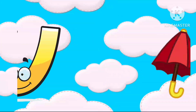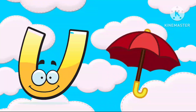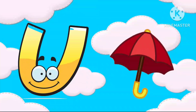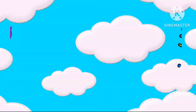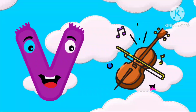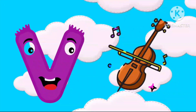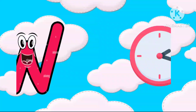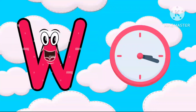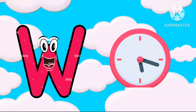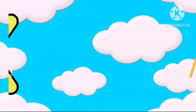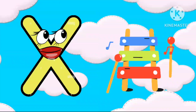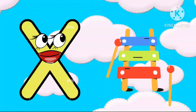U is for Umbrella, U-U-Umbrella. V is for Violin, V-V-Violin. W is for Watch, W-W-Watch. X is for Xylophone, X-X-Xylophone.